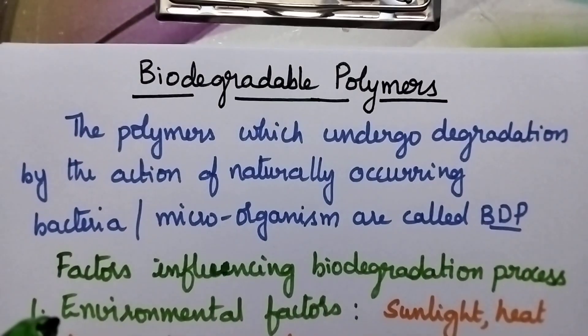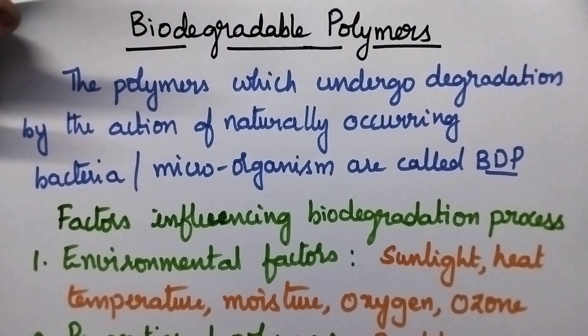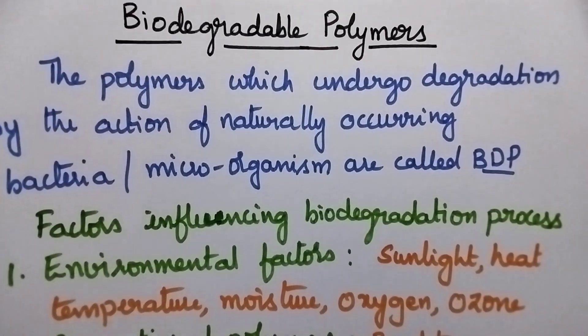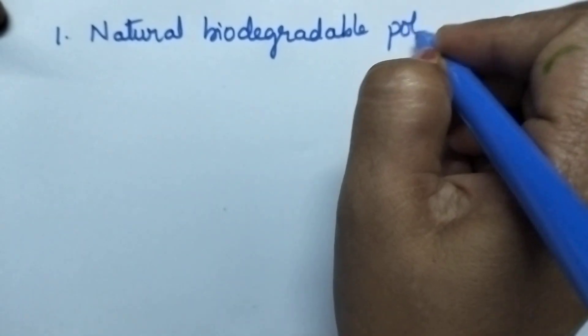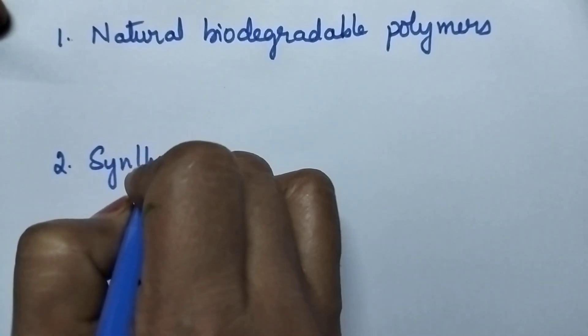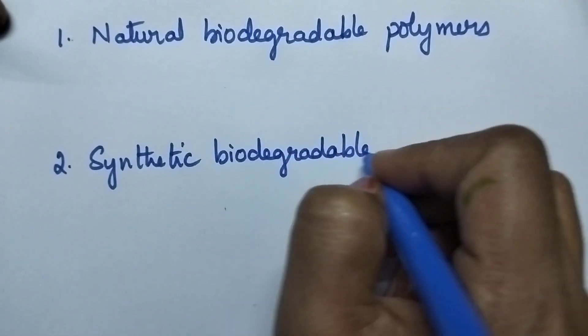This is about the classification of biodegradable polymers. They can be classified into two types: oxo-biodegradable polymers and hydro-biodegradable polymers. The hydro-biodegradable polymers can further be classified into two types, namely natural biodegradable polymers and synthetic biodegradable polymers.